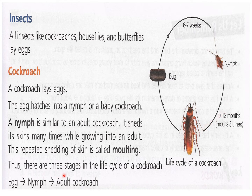Thus there are three stages in the life cycle of a cockroach: egg, nymph, and adult cockroach. So you can see here — egg, nymph, and adult cockroach.